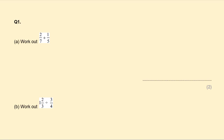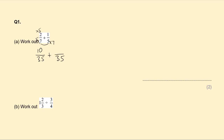First, we need to find the common denominator. We have denominators 7 and 5, so the common denominator will be 35. We need to find the equivalent fractions. Multiply the numerator by 5: 5 times 2 is 10. To get to 35 we multiply the denominator by 7, so we also multiply the numerator by 7, giving 7 over 35. The denominator stays the same and the numerators 10 and 7 give 17.